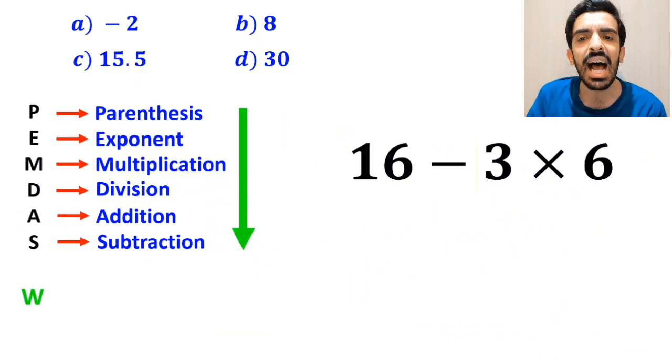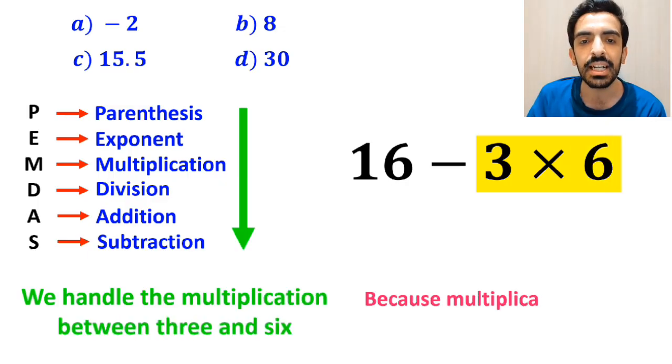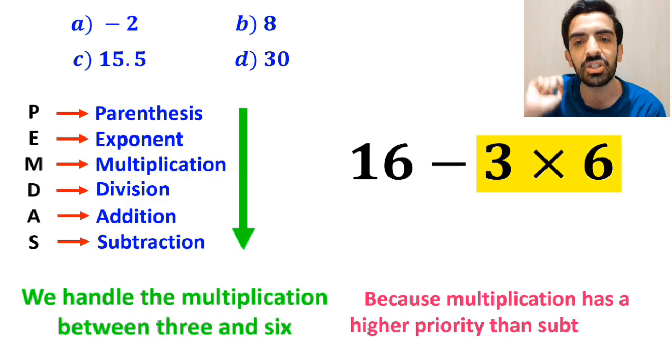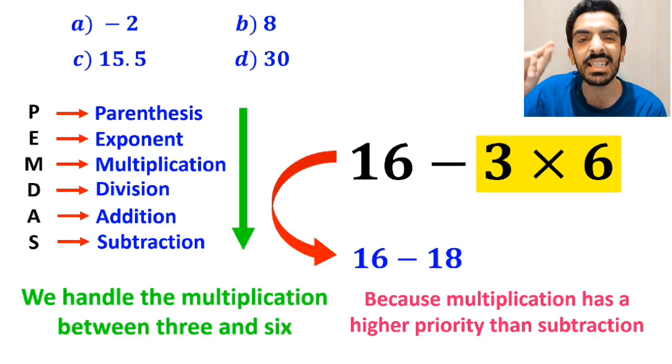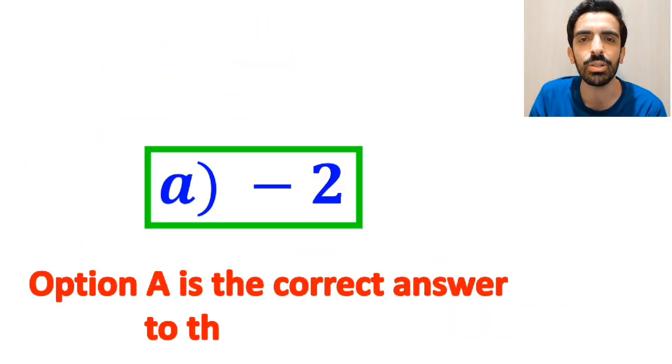In the next step, we handle the multiplication between 3 and 6, because multiplication has a higher priority than subtraction. And this expression simplifies to 16 minus 18, which ultimately gives us the answer negative 2. Therefore, option A is the correct answer to this question.